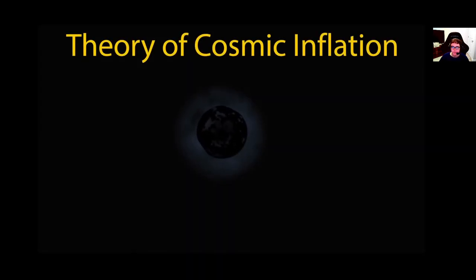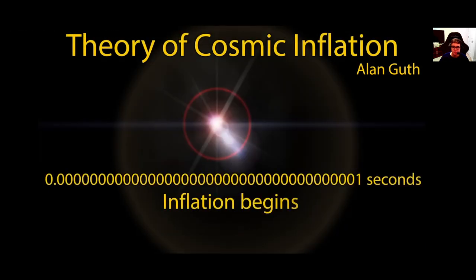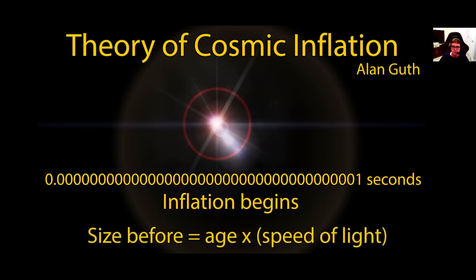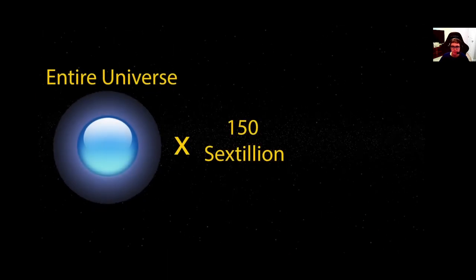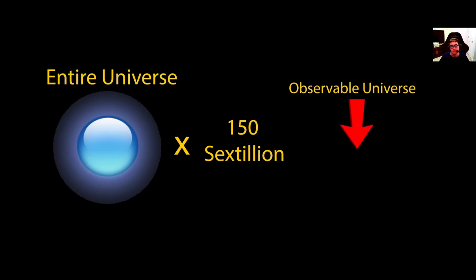According to the theory of cosmic inflation that was proposed by Dr. Alan Guth, if it is assumed that cosmic inflation began at 10 to the negative 37th of a second after the Big Bang, and with the assumption that the size of the universe before inflation began was equal to its age times the speed of light, then this would seem to suggest that after the present day, the entire universe is 156 trillion times larger than the observable universe.